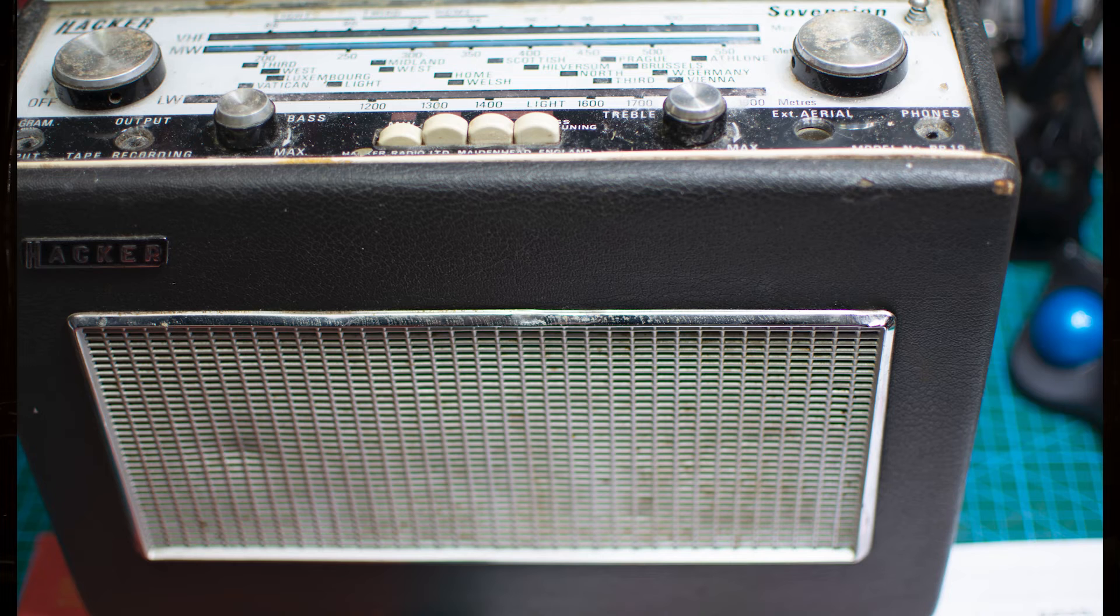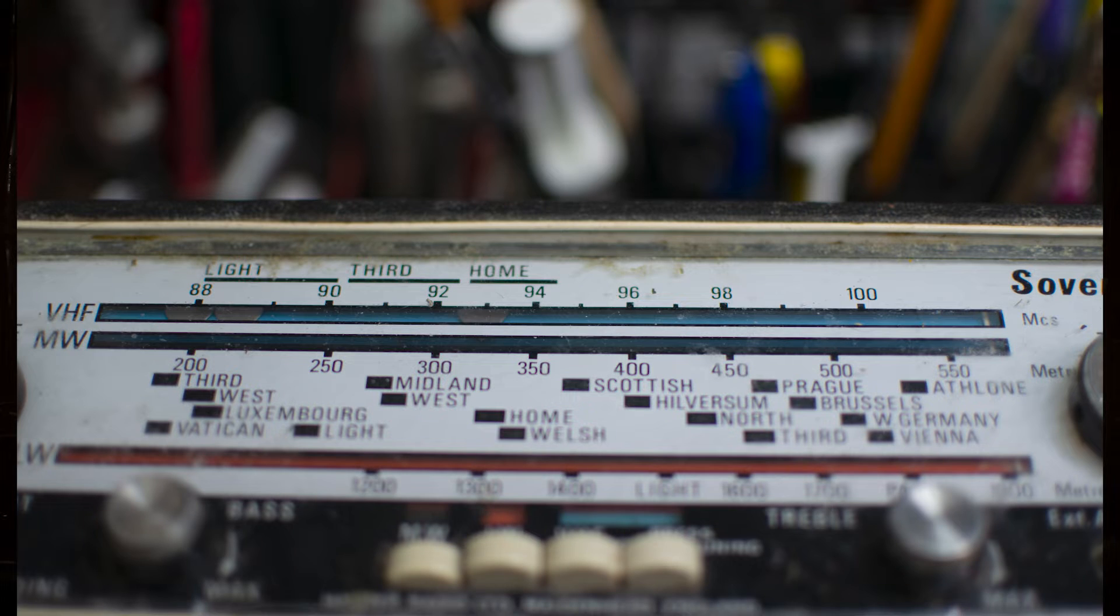The Hacker Sovereign RP-18, the first of the Hacker Sovereign transistor radios. They produced from 1964 to 1967, and the very early models, like the one on the bench now, had a white dial face instead of the normal black.